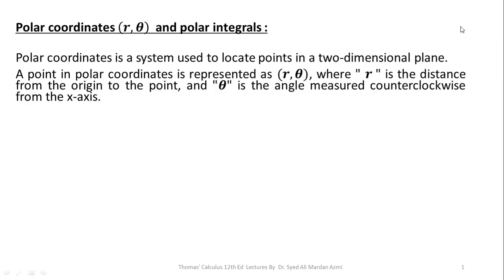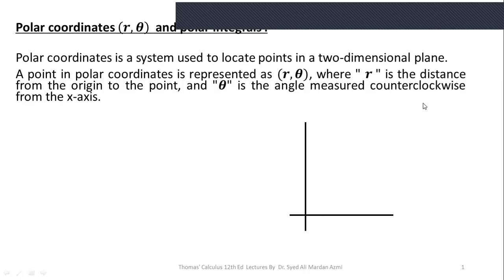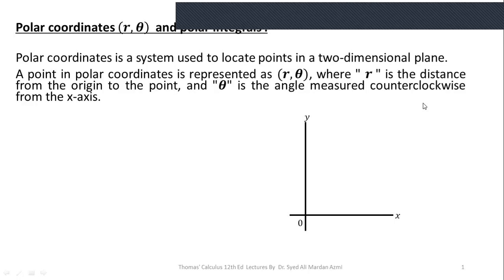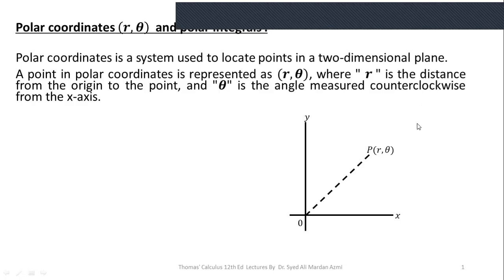First of all, we must know what polar coordinates are. A polar coordinate is a system used to locate a point in a two-dimensional plane. A point in polar coordinates is represented as (r, θ), where r is the distance from the origin to the point and θ is the angle measured counterclockwise from the x-axis in the two-dimensional plane.